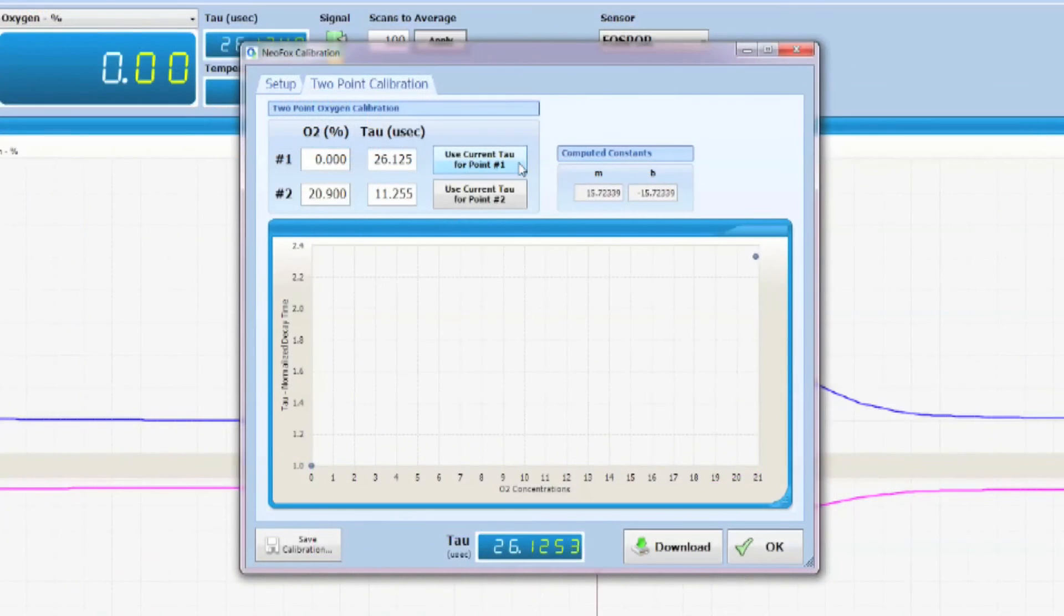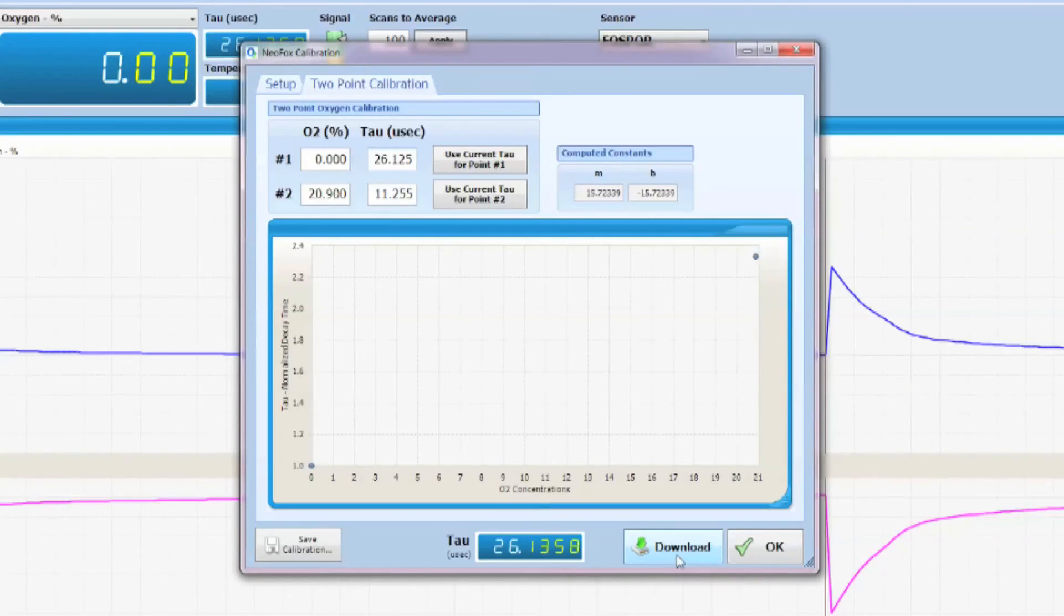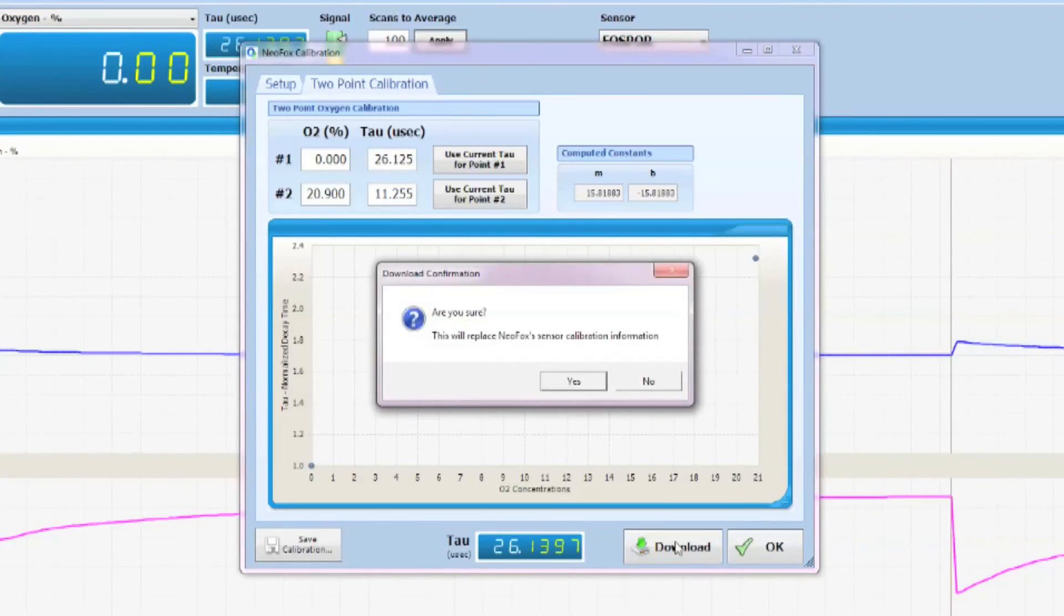You now have your two liquid phase calibration points, and you can click on download. From there, the same box will open asking you to confirm this change. Click yes.